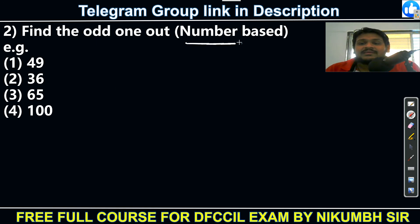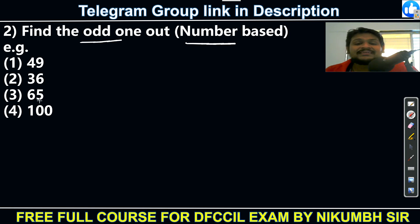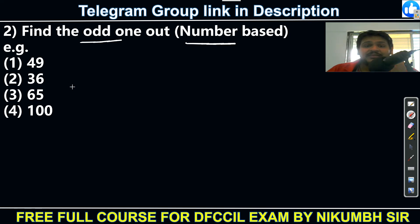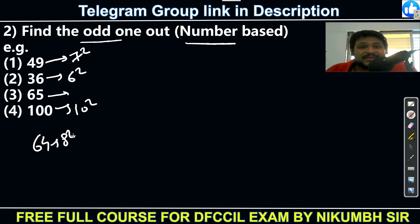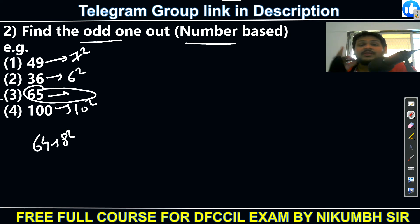For number-based questions, example: 49, 36, 65, 100. You need to think of different logics. Here 49 is 7 squared, 36 is 6 squared, and 100 is 10 squared. All others are perfect squares, but 65 is not a perfect square — 64 would be 8 squared. So the answer is 65, which is not a perfect square. This is the second type of question.